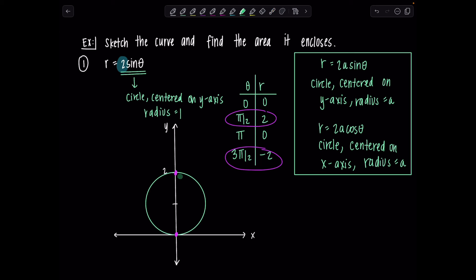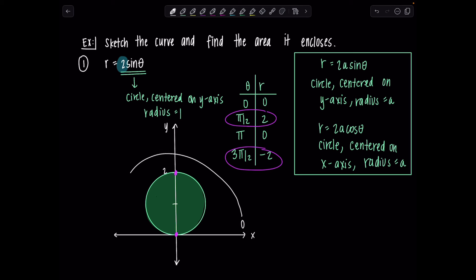We want the area enclosed by this entire circle. Notice the area starts when theta equals 0, and the curve keeps tracing until theta equals pi — it goes all the way around. The circle doesn't exist in quadrants 3 and 4, so the limits of integration must go from 0 to pi — no more, no less. Going 0 to 2pi would be wrong. Not all circles are centered at the origin, so you must graph and understand the limits based on that graph.